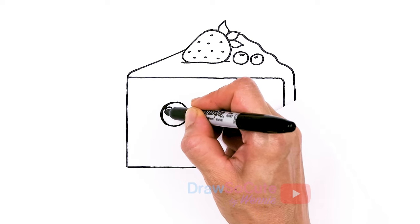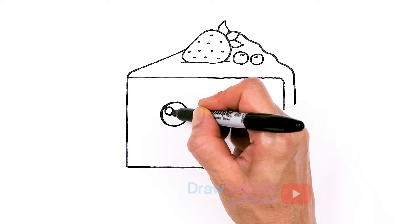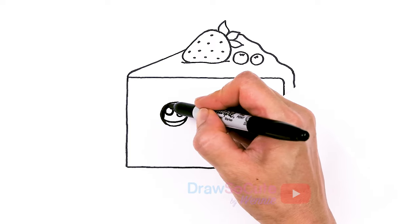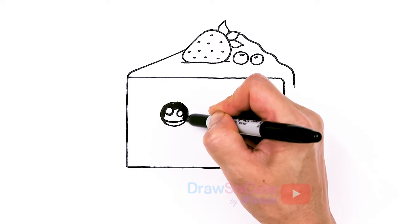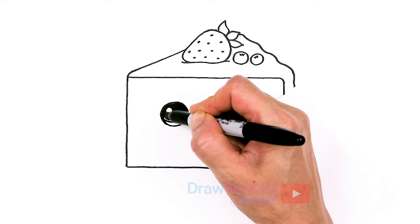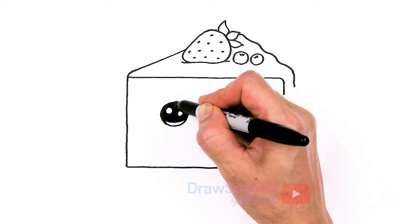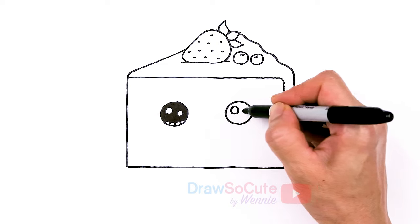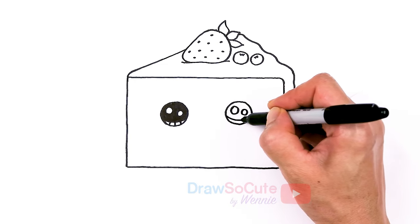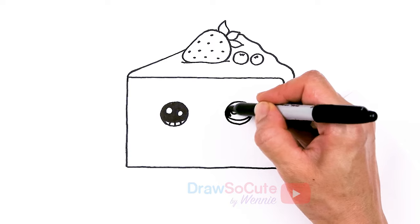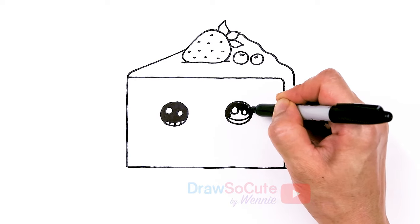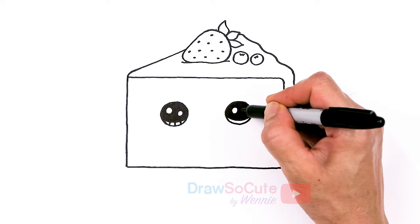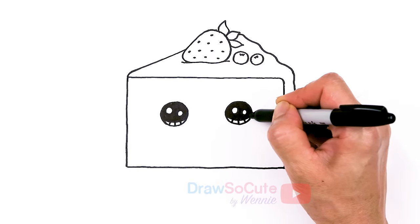Let's make the Draw So Cute eyes. So two small circles inside for highlights and a curved line at the bottom. And shade in the top. And lines at the bottom. And same thing over here. There.